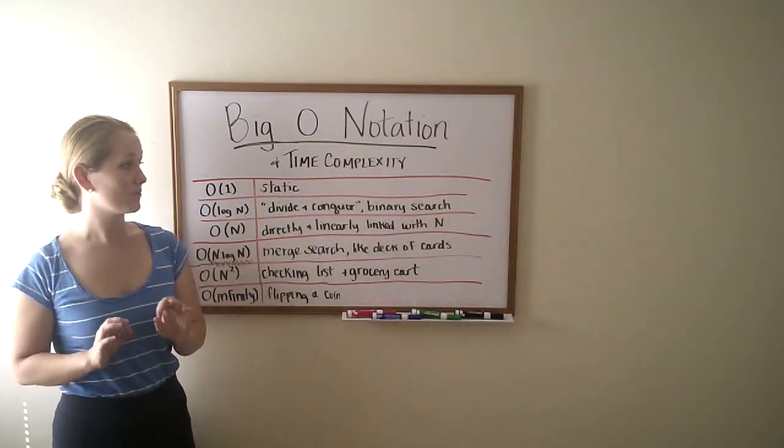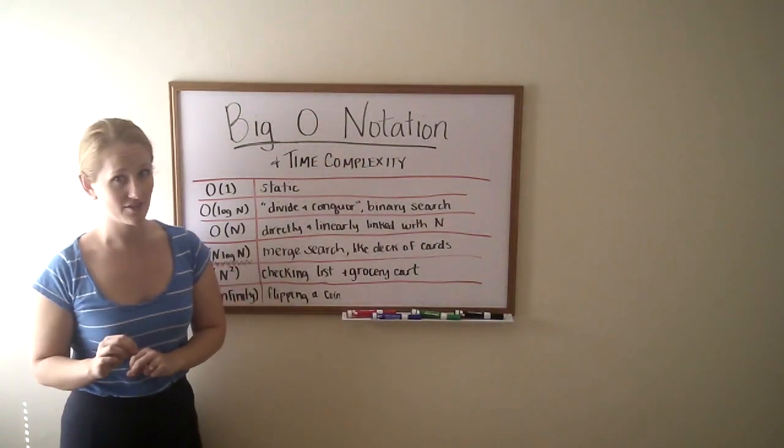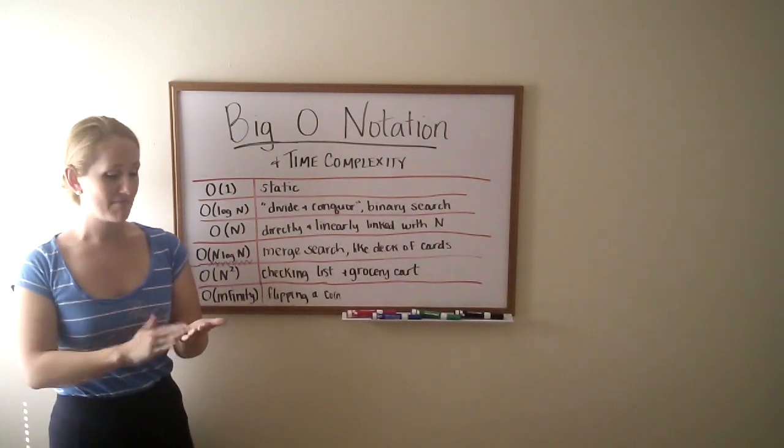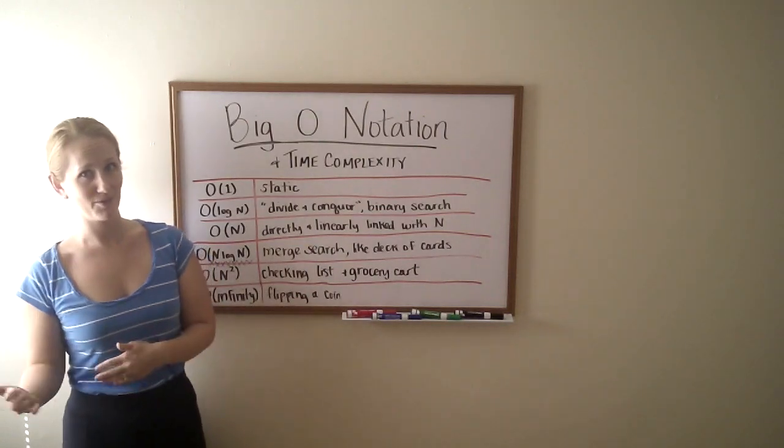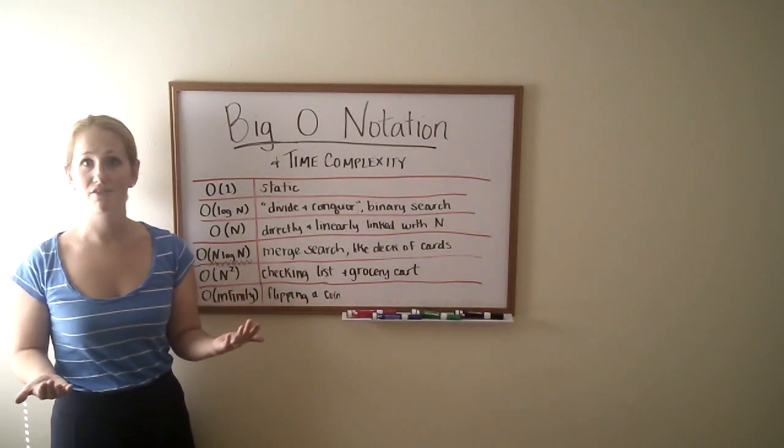O n is where it directly and linearly connects with the entry n. So the amount of time it would take you to read a book directly correlates to how long that book is. That's not exponential. It's very, very straightforward.